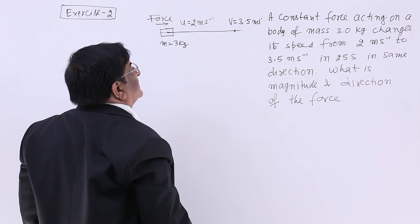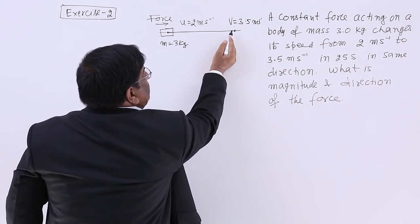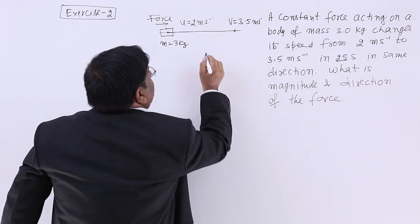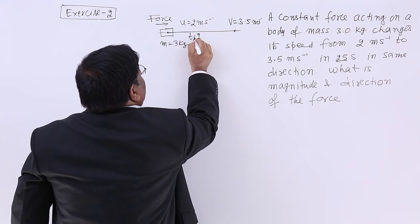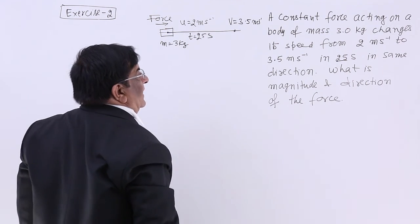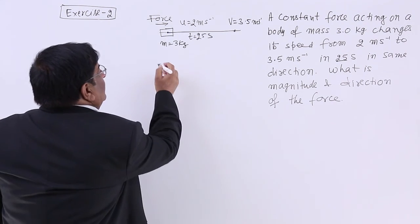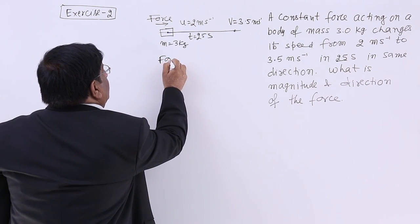How much time has it taken from this point to this point? That is also given: 25 seconds. So we write here, T is equal to 25 seconds. What is magnitude and direction of the force? We have to find out force.